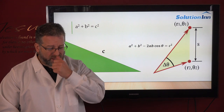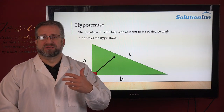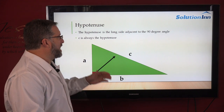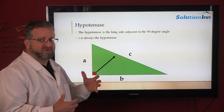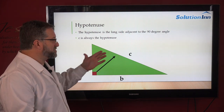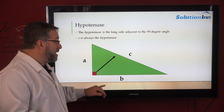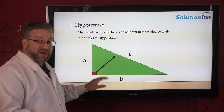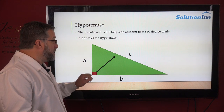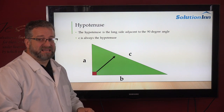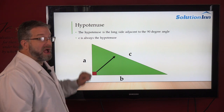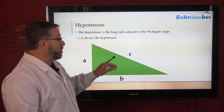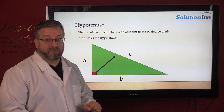The first thing we've got to understand is what these letters mean. When looking at the Pythagorean Theorem, there is a special side to the triangle. We have the 90 degree angle — we know it because it creates a square. The side adjacent to that 90 degree angle is called the hypotenuse, and the hypotenuse is the longer side.